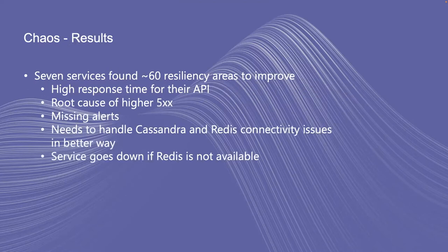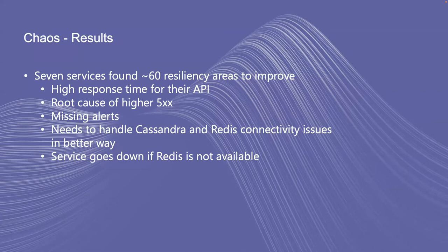When we gave Chaos Mesh to our Lighthouse clients, around seven services tried it out. When we collected feedback, we found they were able to identify around 60 resiliency areas to improve. For example, alerts were missing when a service goes down or when an external endpoint that a service depends on is down. Those are very good results that we got from just a handful of services.